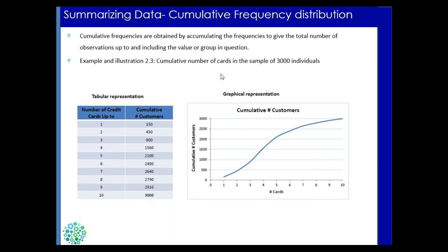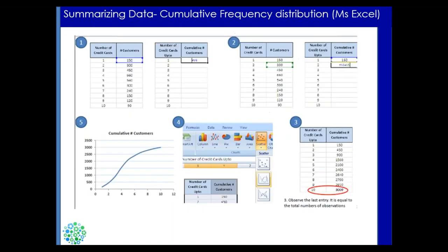This cumulative distribution has actual business importance — senior leadership uses it to show how the portfolio is developing. The Excel example shows a simple way to prepare it, and you'll get the material to follow along.